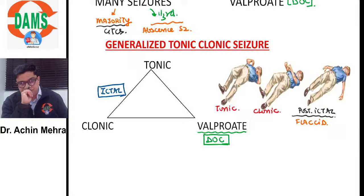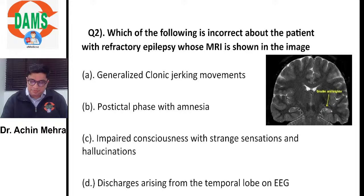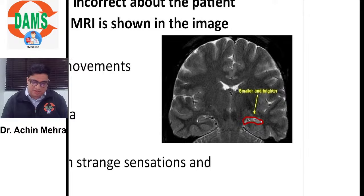Now let us read this question: which of the following is incorrect about the patient with refractory epilepsy whose MRI is shown? In the image, there is something small and bright — small meaning atrophic, and bright meaning hyperintense. Tell me which part of the brain we are seeing and what is the likely disorder in this patient.